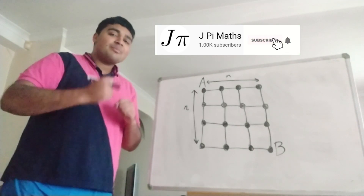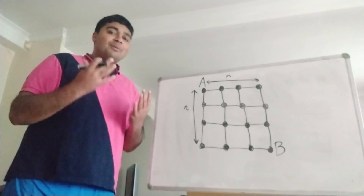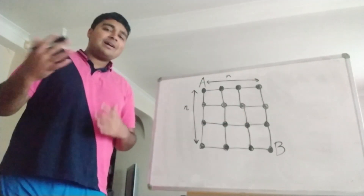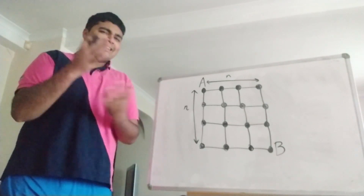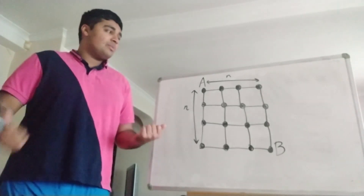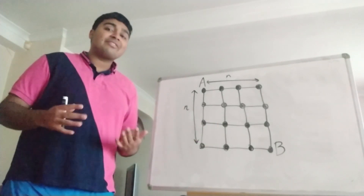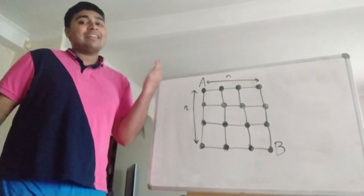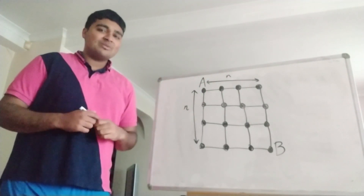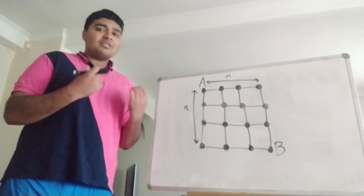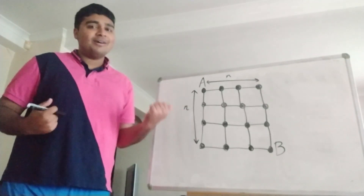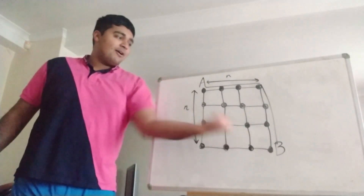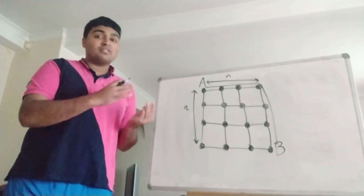Before we consider paths of longest length, let's do the simpler problem and ask about paths of shortest length. If you want to travel from A to B using the shortest path possible, I claim the answer is just 2n. Any path from A to B must be of length at least 2n, because we have to go n units to the right and n units down, which already contributes 2n. And a very simple path — just go across and then go down — has length 2n, which solves the shortest path case.